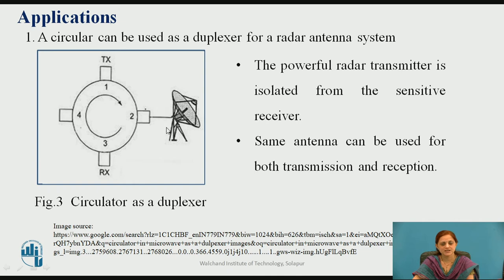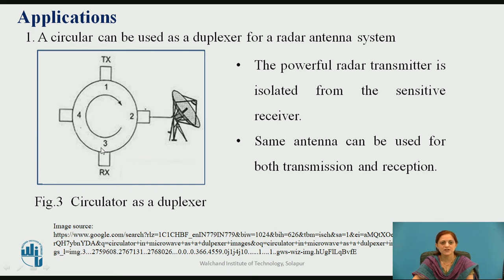The first application is that the circulator can be used as a duplexer for a radar antenna system. Consider a 4-port circulator: the transmitter is connected to port 1, the receiver is connected to port 3, the radar antenna is connected to port 2, and port 4 is terminated. Thus the powerful radar transmitter is isolated from the sensitive receiver. The same antenna can be used for both transmission and reception, so the circulator functions as a duplexer.